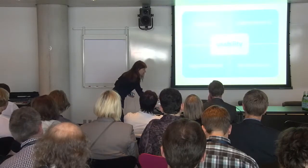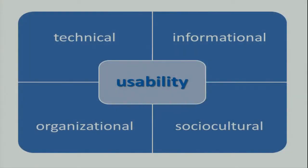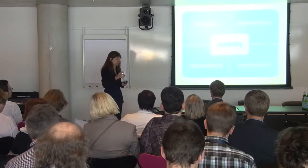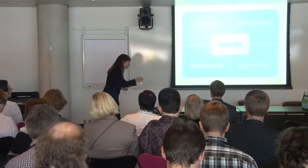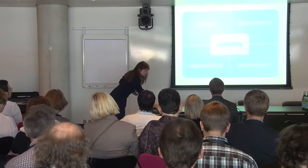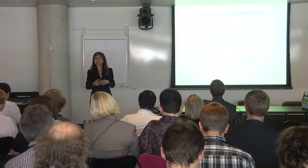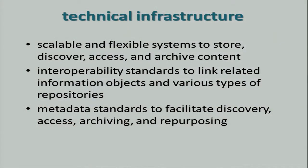Such a vision requires an environment where we factor in several issues. Today I am going to present four quadrants — four policy and process areas. I put usability at the center because I see it as a central issue that overlaps with the other sectors.